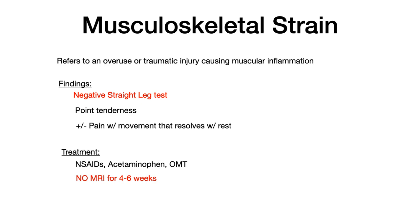You'll find a negative straight leg test. The straight leg test involves the patient lying on their back, with the examiner keeping their leg straight and slowly raising it into the air. If around 30 degrees they have radicular pain, that indicates nerve root impingement, usually suggestive of a disc herniation. Because musculoskeletal strain is just a muscular injury and not an organic disc herniation, the straight leg test will be negative. Patients will have point tenderness, and may or may not have pain with motion that gets better with rest. Treatment is conservative: NSAIDs, acetaminophen, and OMT.